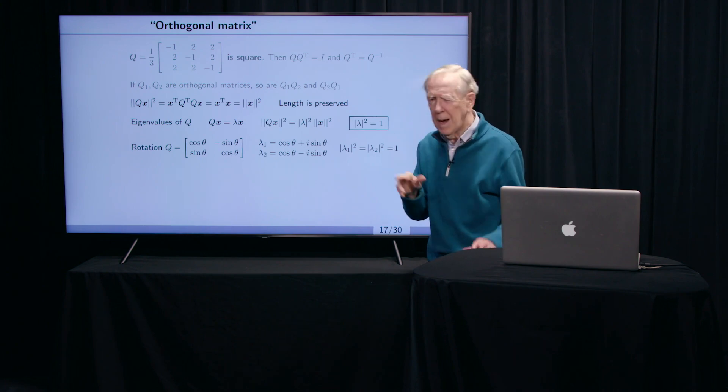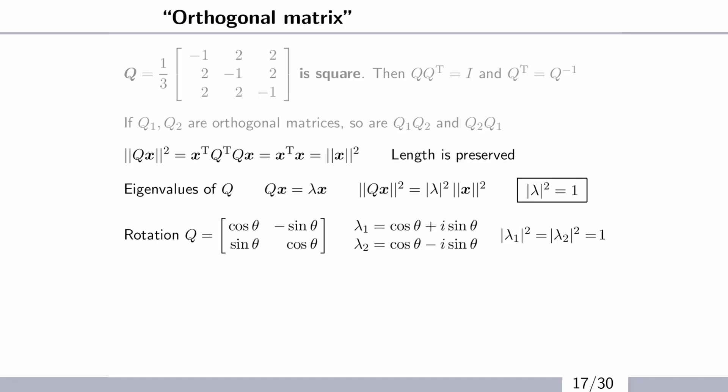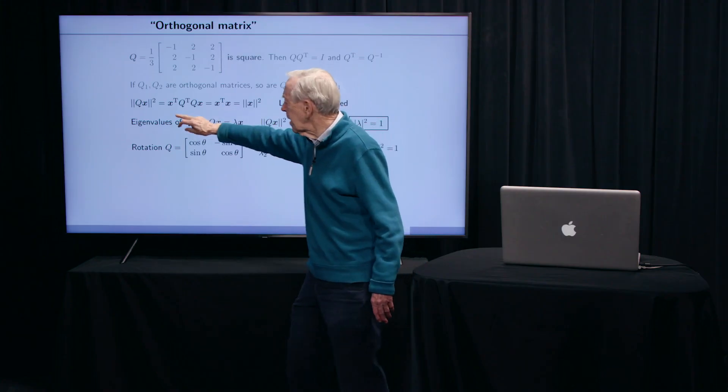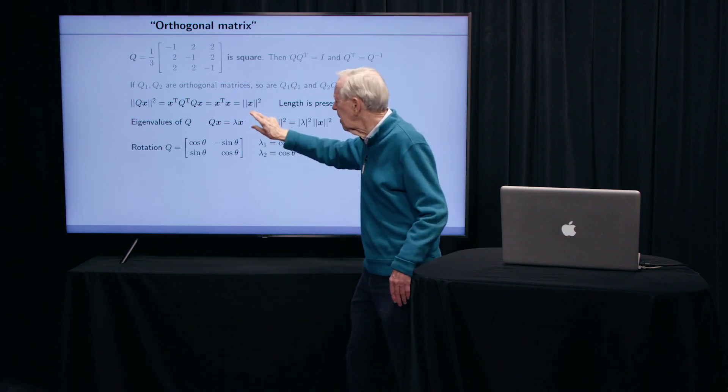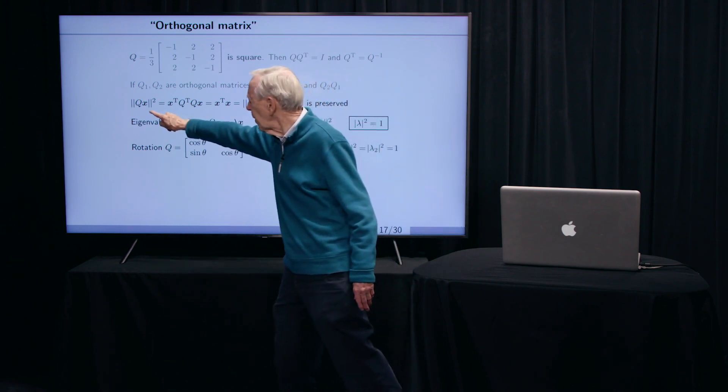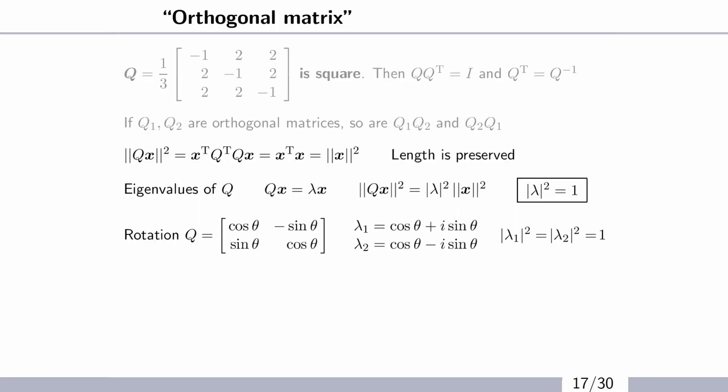To understand why these matrices are important, this line is telling me that if I have a vector x and I multiply by Q, it doesn't change the length. This is a symbol for length squared, and that's equal to the original length squared. Length is preserved by these Qs.